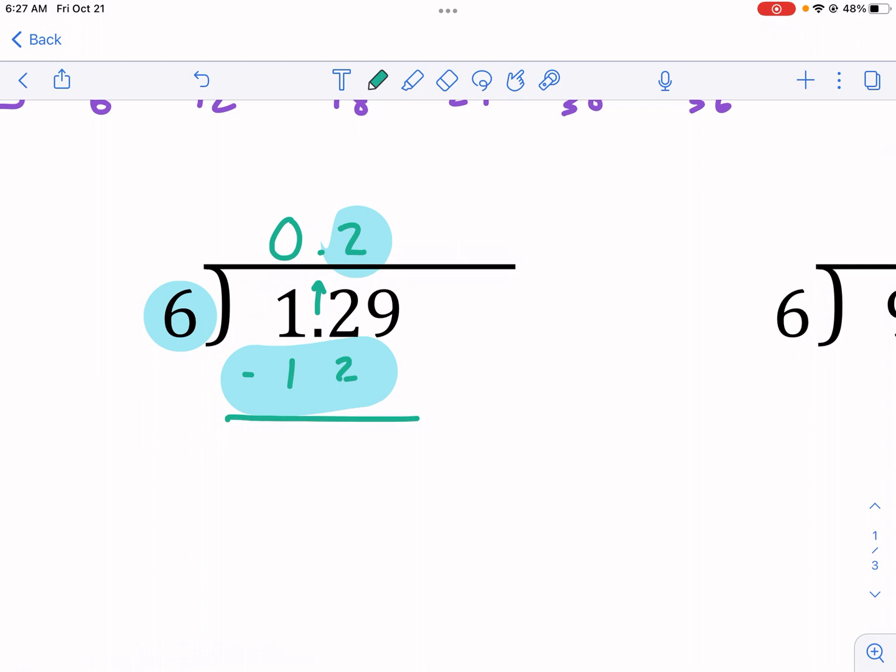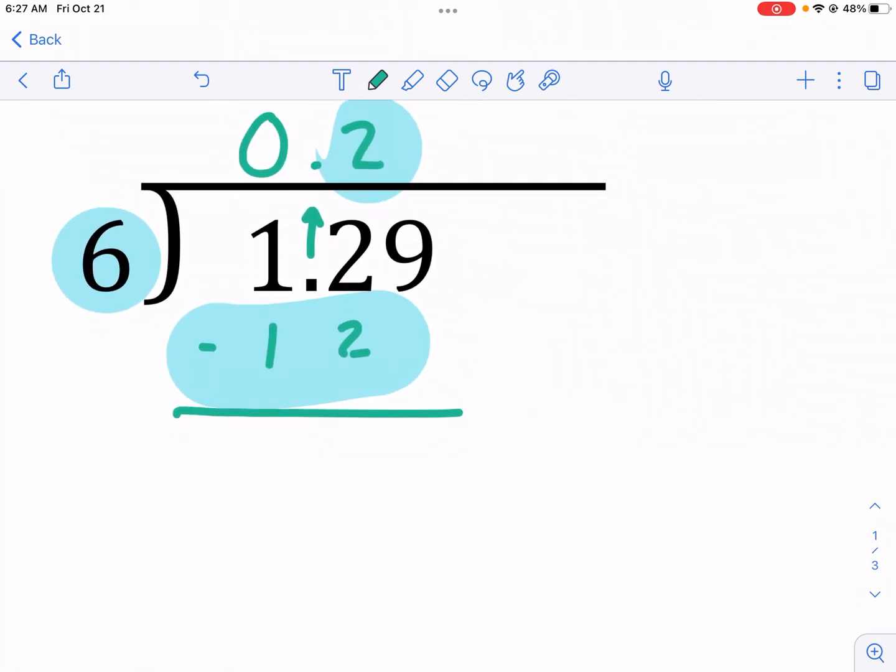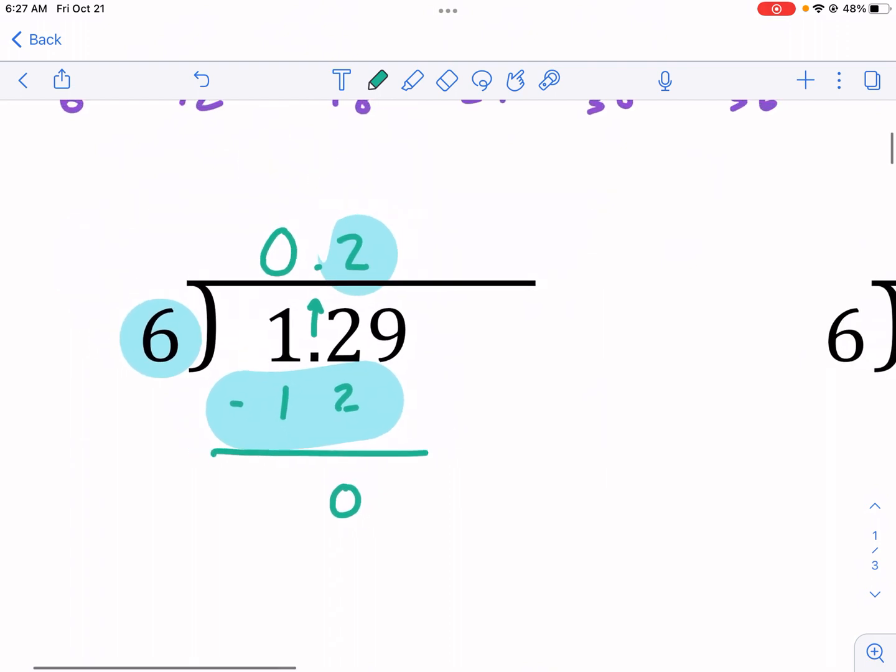Now, what I'm doing is I'm trying to see how much is left over. So, now I do 12 minus 12, and I know that equals 0. I have 0 left over, and went into 12 perfectly. But guess what? I'm not done with this number, 1.29. I still have this 9 to take care of, so I'm going to drop this 9 down.